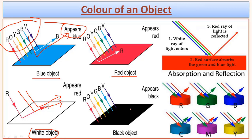If the object is dark or black, it absorbs all the light rays. When it absorbs all the light rays, no light ray can bounce back from it, creating an appearance of darkness. That dark appearance gives us the color black. I hope you have understood the concept of light as well as the concept of color with respect to light.